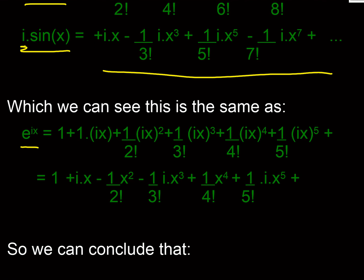Now if we looked at e to the power ix, we calculated that series before, and we would get our 1 and our 1 plus ix, then ix squared over 2 factorial, ix cubed over 3 factorial, ix to the power 4 over 4 factorial, all the way up from then on.